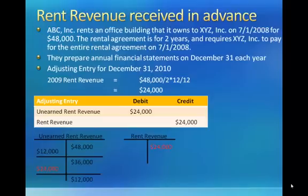This adjusting entry reduces the unearned rent revenue account to $12,000, which represents the six months still remaining on the rental term that they still owe the other company.